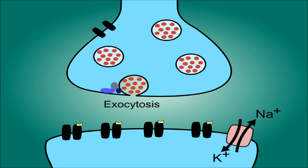The vesicles then release the neurotransmitters out into the space between the two neurons, called the synaptic cleft.